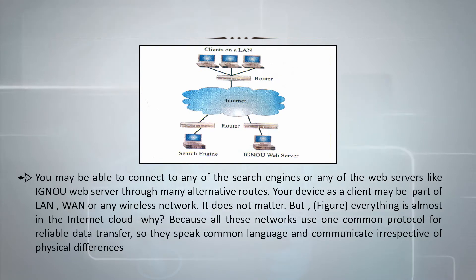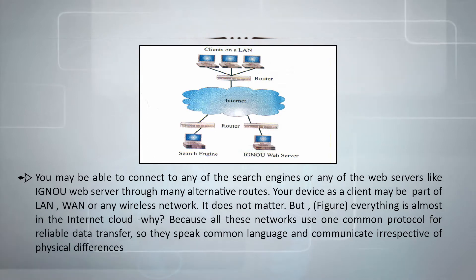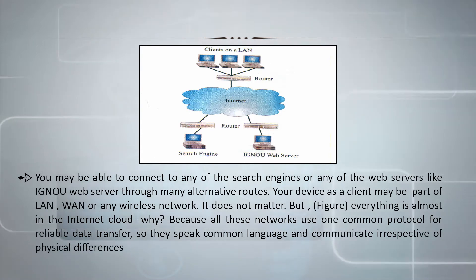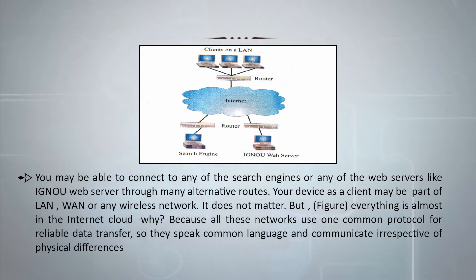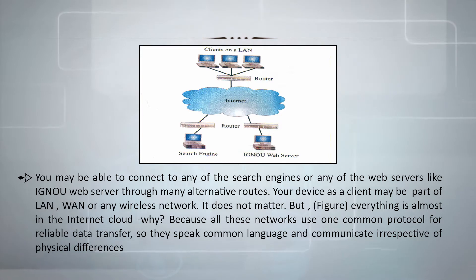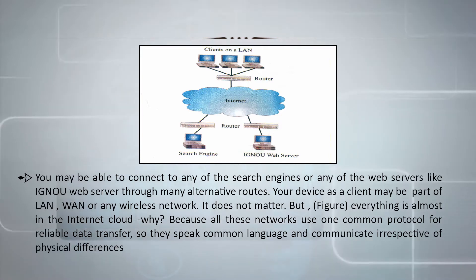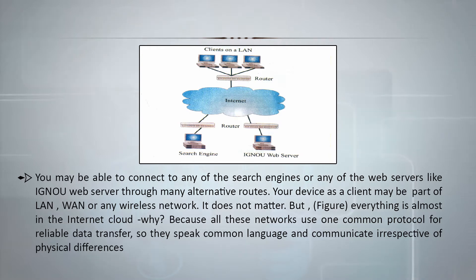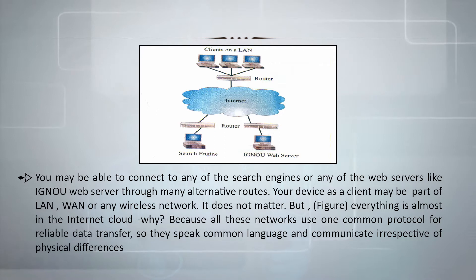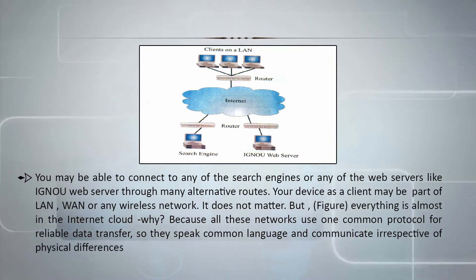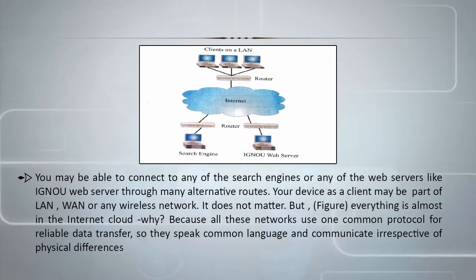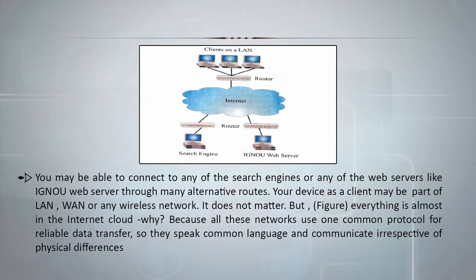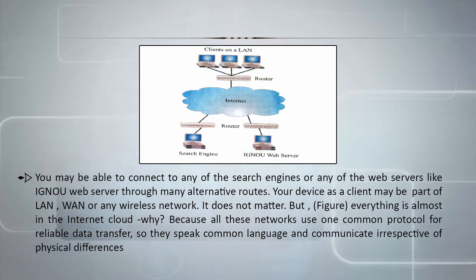You may connect to any search engine or web server, such as the IGNOU web server, through your browser, without knowing the route it takes. There are many alternative routes. Your device as a client may be part of a local area network, wide area network, or any other wireless network — it does not matter. Everything is absorbed into the internet cloud because all these networks use one common protocol for reliable data transfer. They speak a common language and communicate irrespective of physical differences. The image shows clients on a local area network connected to the internet through a router, and a web server connected to the internet through a router.